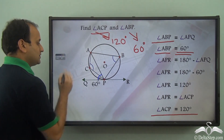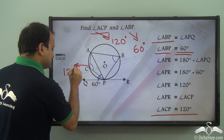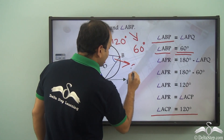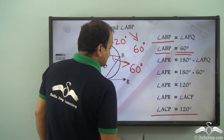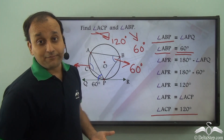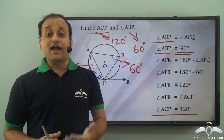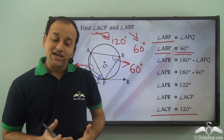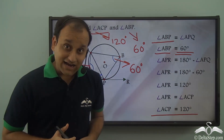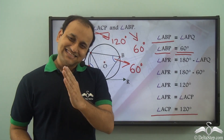So angle ACP is 120 degrees and angle ABP is 60 degrees. We were able to find these values using the theorem which states that the angle made by a tangent and a chord passing through the point of contact is equal to the angle in the alternate segment.